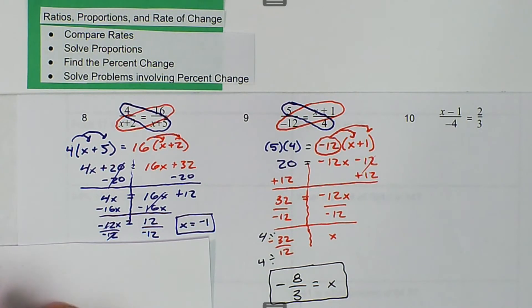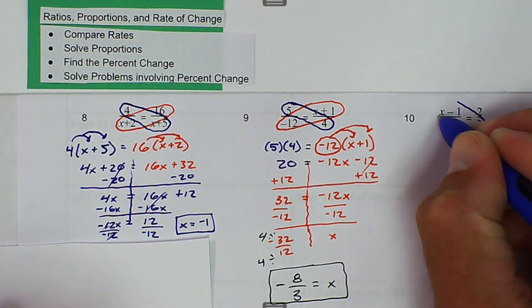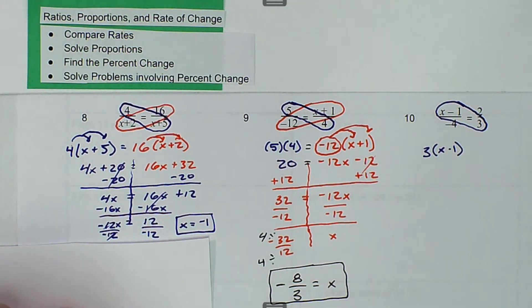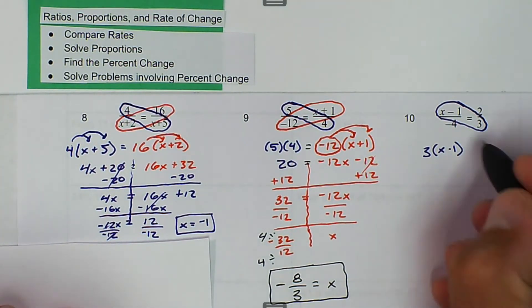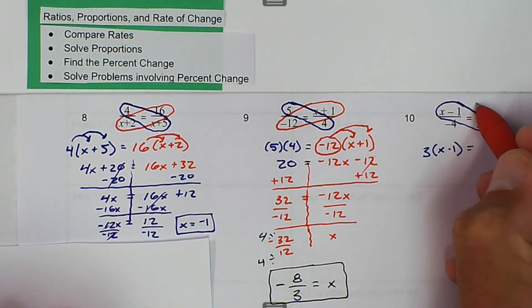And then we have number 10. Same thing. We'll multiply our extremes. So 3 times x minus 1, and that is going to be equal to negative 4 times 2.